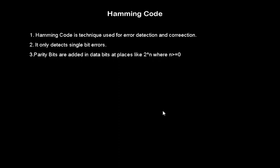Parity bits are added in data bits at places like 2 raise to n, where n starts from 0 and goes till 1, 2, 3, or 4 depending on the size of the data bits which you are having.